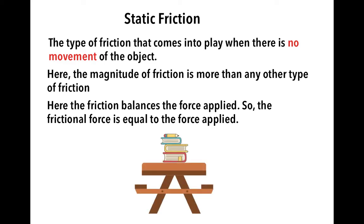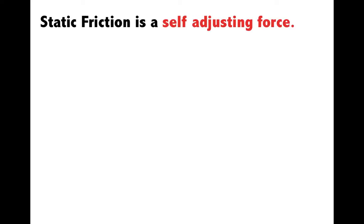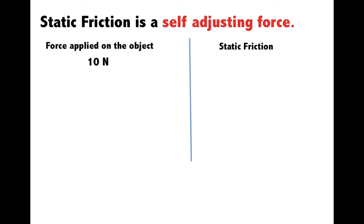Let us bring the table and the books back. If I apply force to the right, then the frictional force will act towards the left and be of equal magnitude to the force applied, so they balance each other and there is no movement. Static friction is a self-adjusting force — it will always equal the amount of force applied. So if the force applied is 10 newtons, static friction is 10 newtons; if 30 newtons, then 30 newtons; if 50 newtons, then 50 newtons.